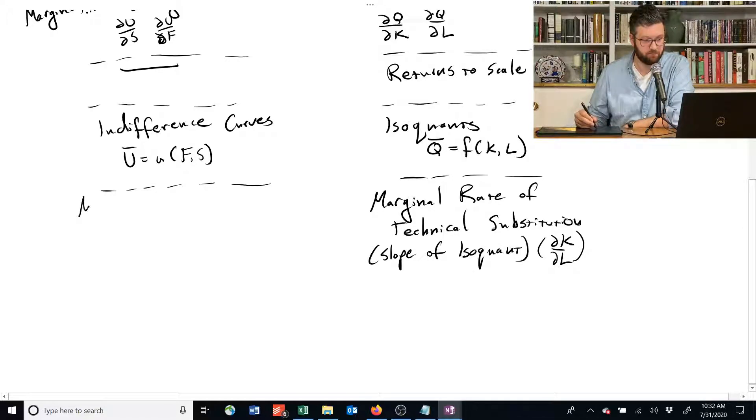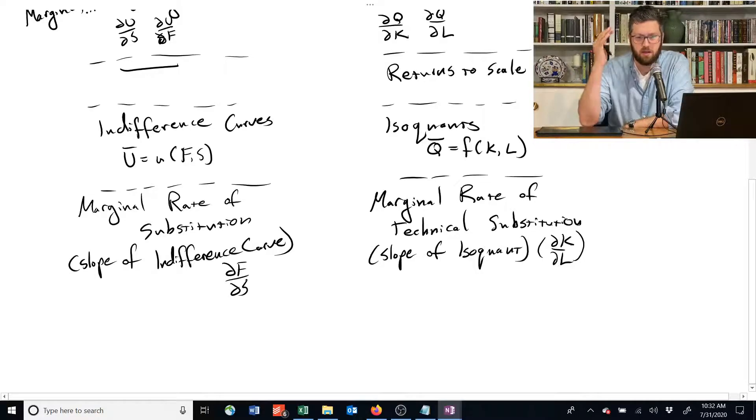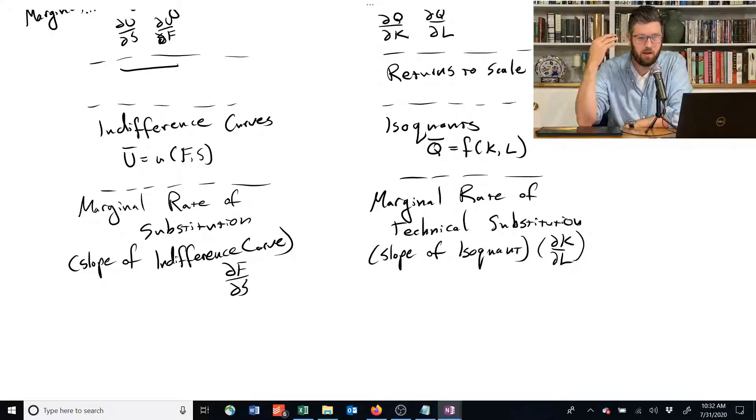Over here, we've got the marginal rate of substitution. And that's going to be the slope of the indifference curve. And something like the partial change in F over the partial change in S.